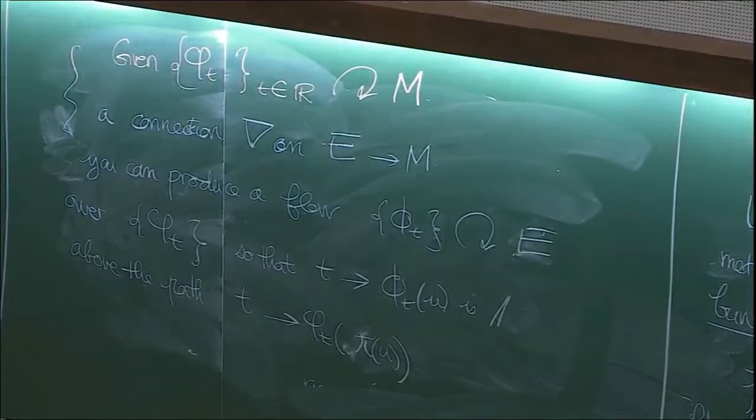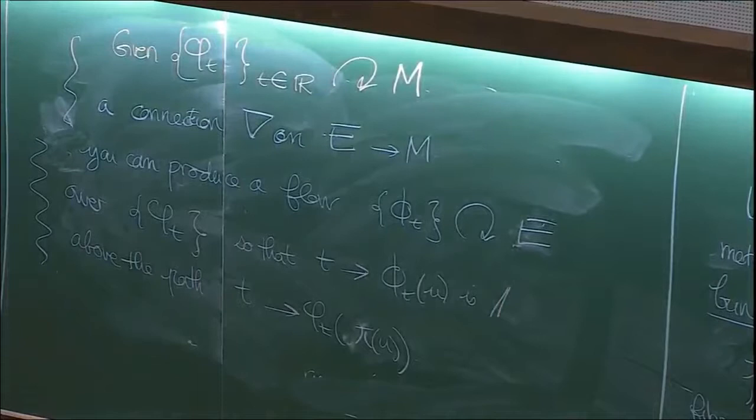So given a flow phi_t acting on M and a connection nabla on E over M, you can produce a flow acting on E over the flow phi_t, where each fiber map is given by parallel transport. That's a very natural way to produce bundle maps out of connections. In our situation, we will build bundle maps out of representations that give rise to flat connections.